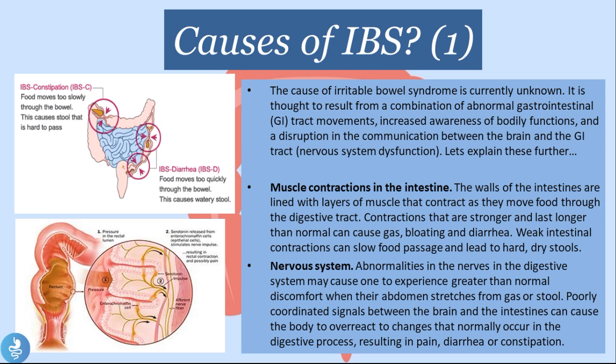The first cause is muscle contractions in the intestine. The walls of the intestines are lined with layers of muscle that contract as they move food through the digestive tract. Contractions that are stronger and last longer than normal can cause gas, bloating, and diarrhea — which explains diarrhea-predominant IBS. Weak intestinal contractions can slow food passage and lead to hard, dry stools, explaining constipation-predominant IBS.